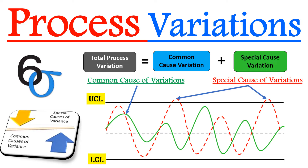What are process variations, which comprise of common cause of variation and special cause of variation? We will understand the difference between these two with the help of some animated examples, so please watch this video till the end.